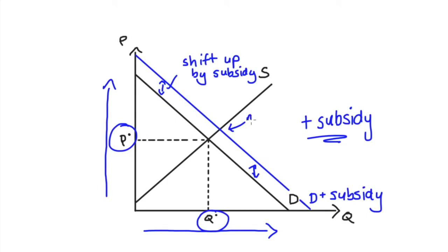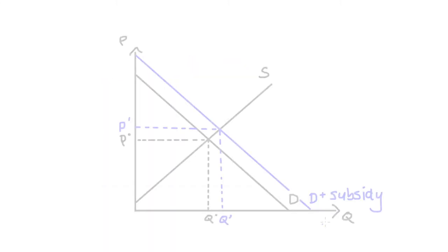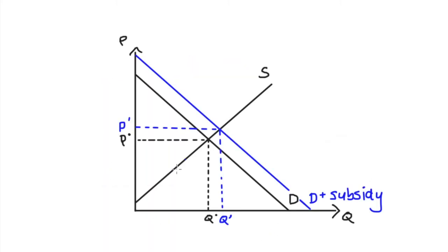This gives us a new equilibrium where we get a new price, P prime, and a new quantity traded, Q prime. Note that as a result of the subsidy, we're trading more than before — Q prime is above Q*. Also, P prime, our trading price, is above P*. So the price in the market is above the old price, and this is the price that the sellers are going to get per unit.